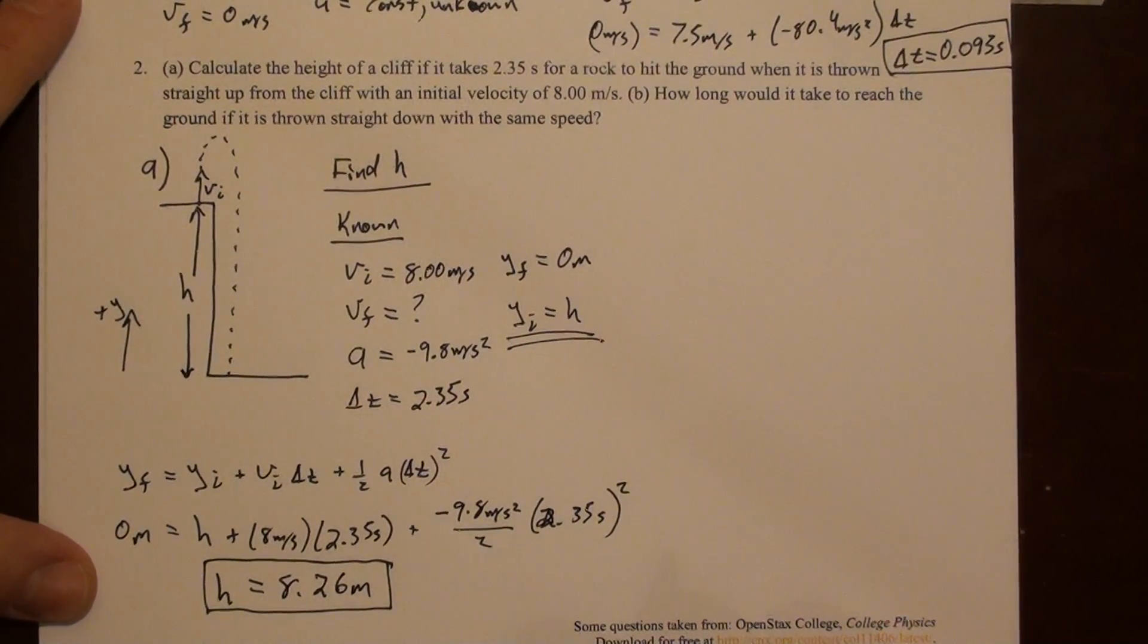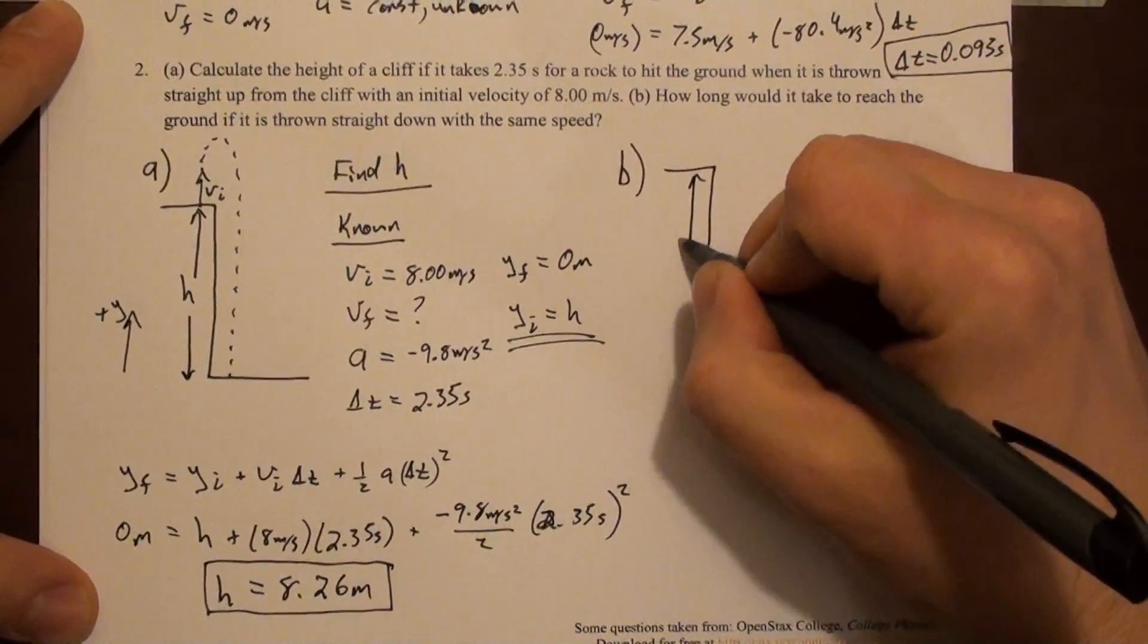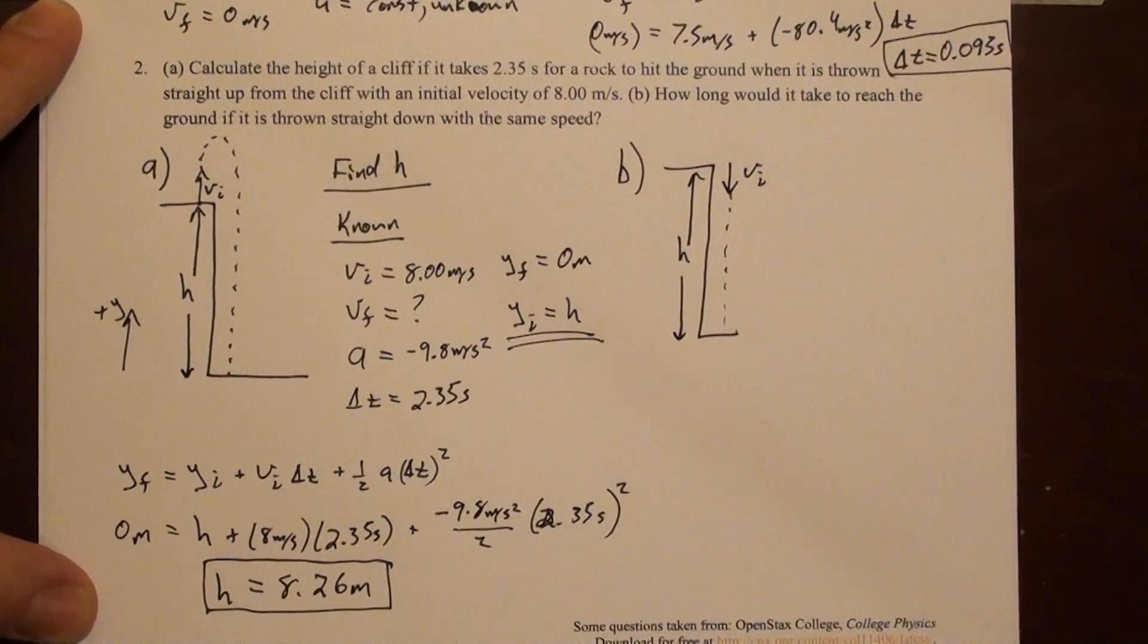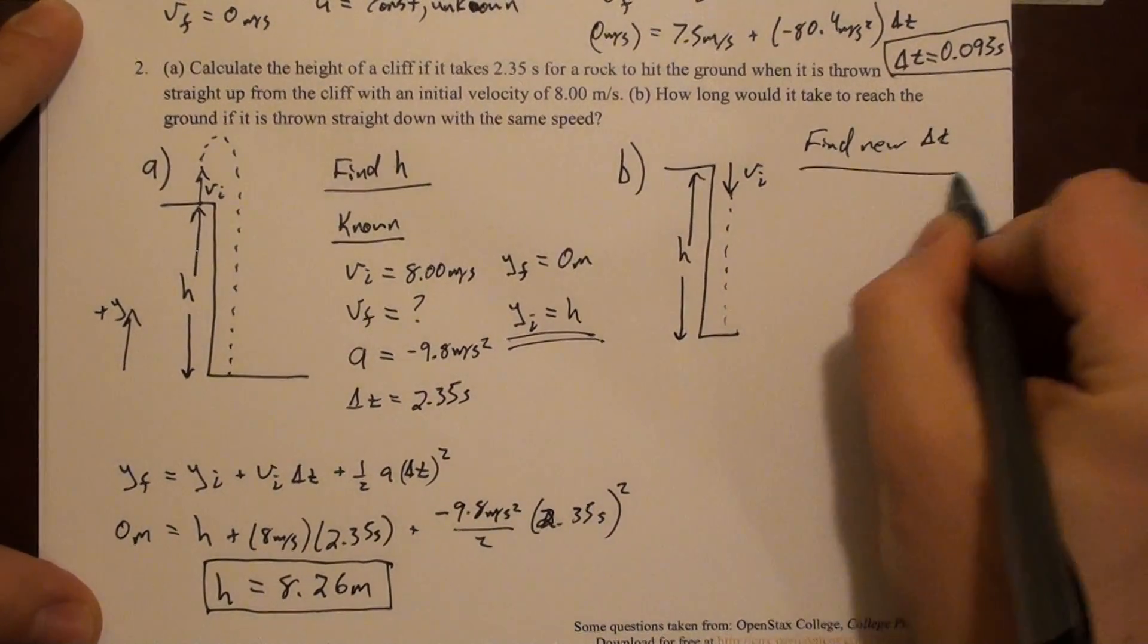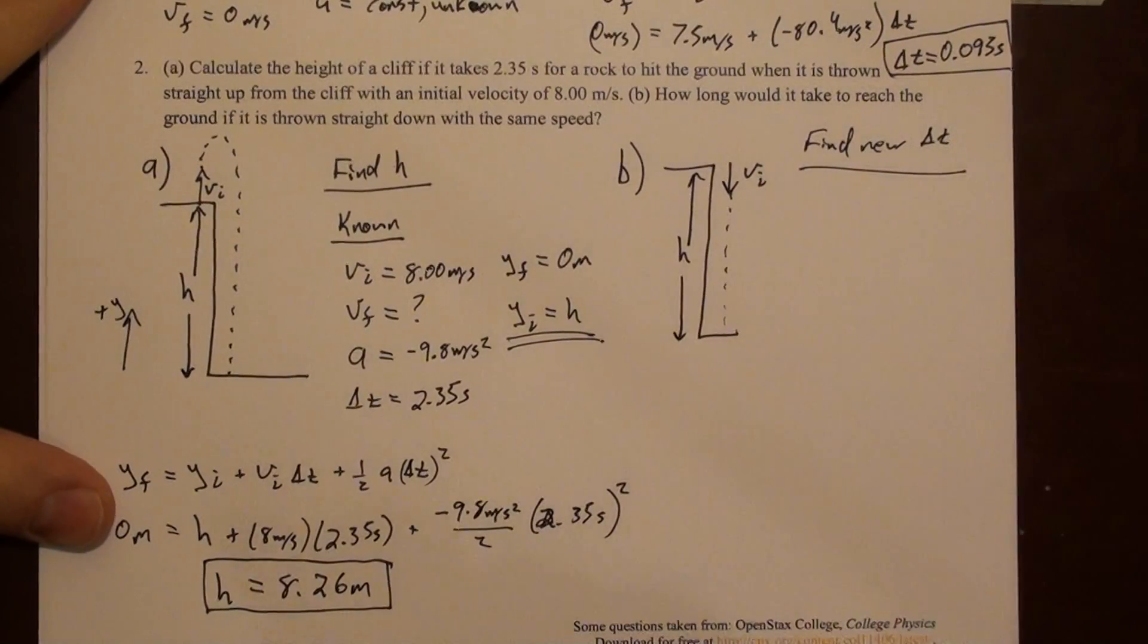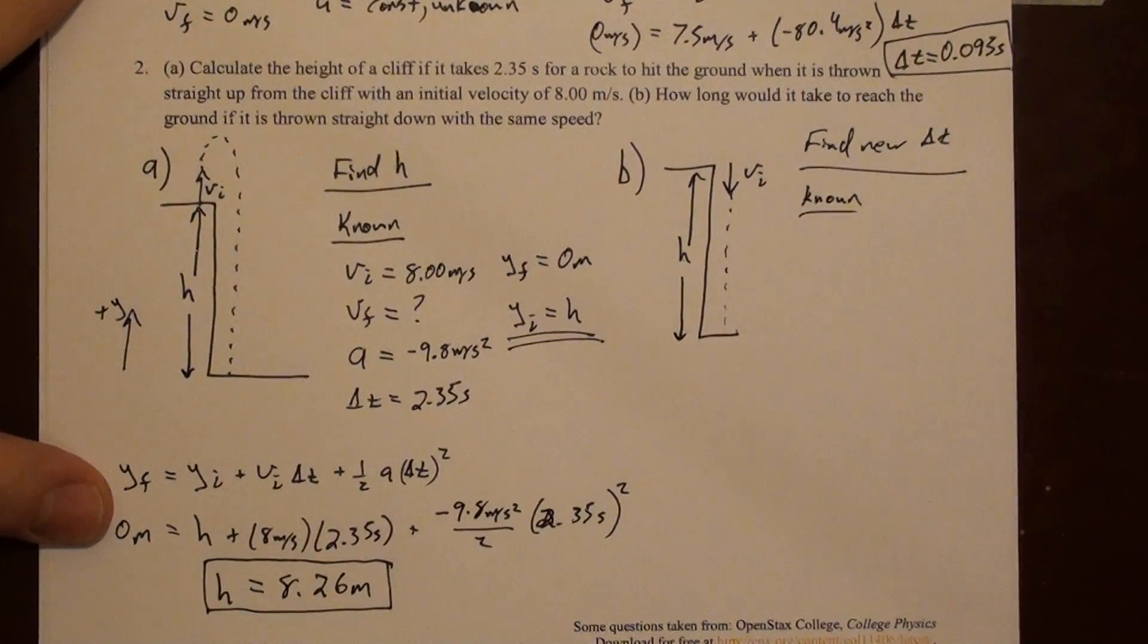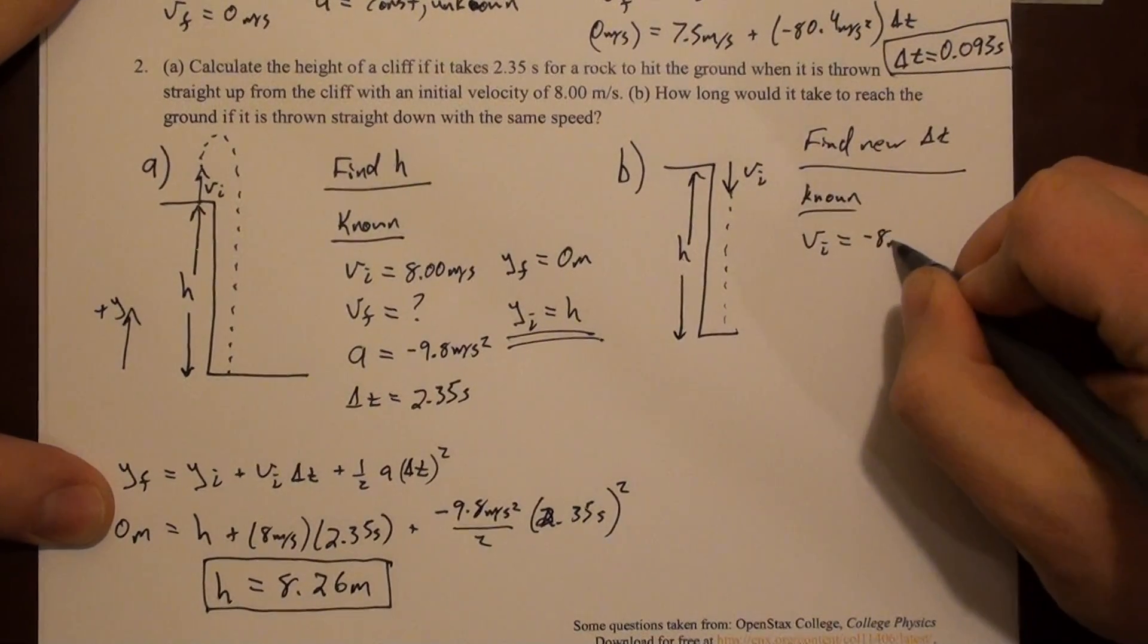So part b asks: how long would it take to reach the ground if it were thrown straight down? So we can modify our picture here. Here's our cliff again. It's the same height that we just solved. Only v initial now points down. So now we're asked to find a new delta t. Clearly we're looking for a time that's smaller than the time we were given initially.